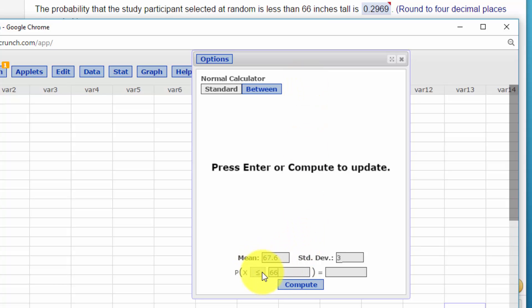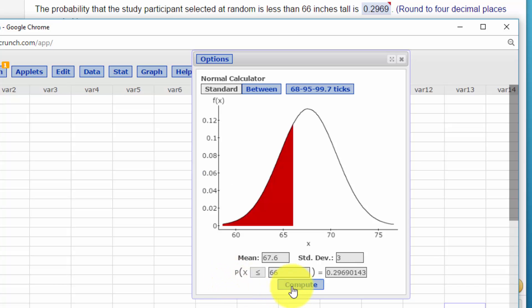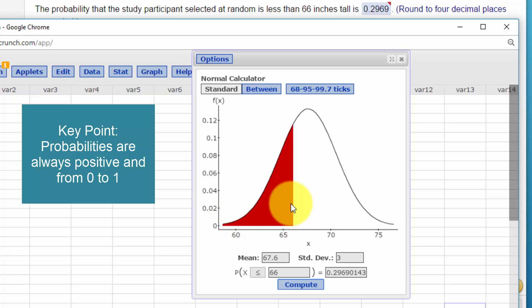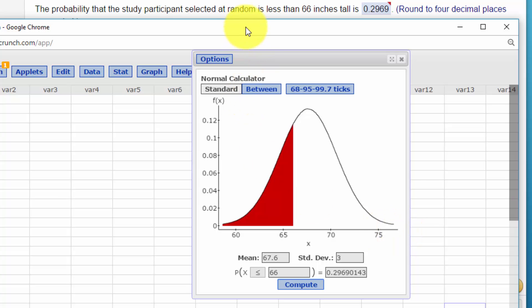Make sure my less than or equal is pointed to the left, which we want that end of the curve. Click Compute, and we get a probability of 0.2969, which is the answer they want there. That's the area in red again. 29.7 percent chance that a person would be less than 66 inches high if the mean is 67.6 inches with a standard deviation of 3.